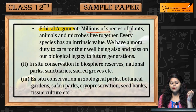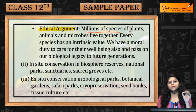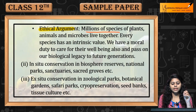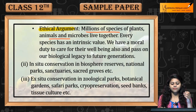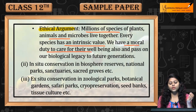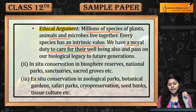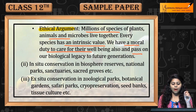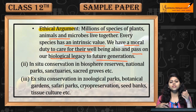Ethical arguments: millions of species of plants, animals, and microbes all live together. Every species has intrinsic value. We have a moral duty to care for their well-being and to pass on our biological legacy to future generations.